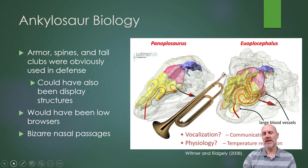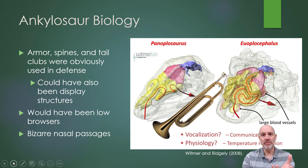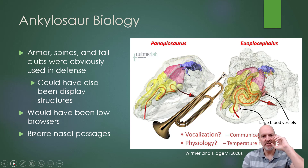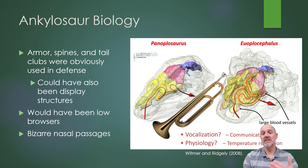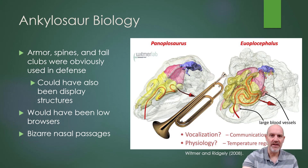Looking at some ankylosaur biology: when they looked into the skulls of this particular group, they found that the nasal passages were quite strange - actually quite contorted into bizarre passages. If you look at these pictures, the arrow here points up the nasal passage, but then notice it just doesn't go straight through to the throat. It actually curls around a few times. This one's even more bizarre, where it goes up and curls around quite a few times before it eventually comes out. Scientists think that perhaps this was for vocalization, maybe for mate calling, something like that - they don't really know. But it's pretty interesting.